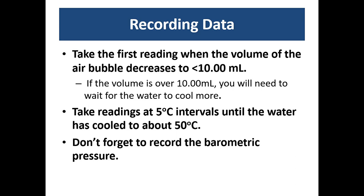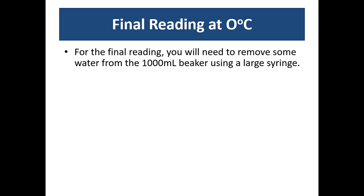We're going to take our first reading whenever the volume of the air bubble is below the 10.00 milliliter mark. So if the volume of the air bubble is above that you will need to wait for the water to cool because we have no accuracy of measurement above the 10.00 milliliter mark. Once you've taken your first reading you'll take readings at five degree intervals until the water has cooled to about 50 degrees Celsius. Don't forget at some point to record what is the barometric pressure. We'll typically have a barometer either in the front of the lab room or by the window of the stock room.